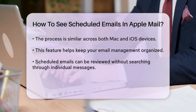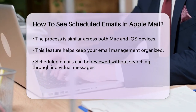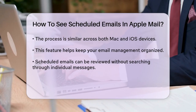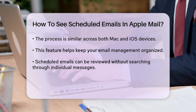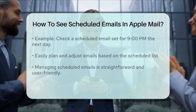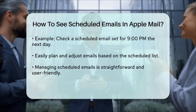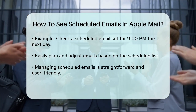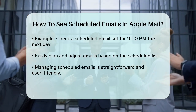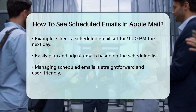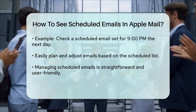For example, if you've scheduled an email to be sent at 9pm the next day, you can check this by looking at the scheduled emails list and seeing the specific time listed on the email. This way, you can plan and adjust your emails according to your needs.